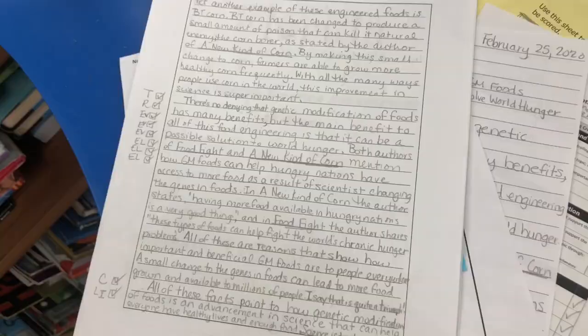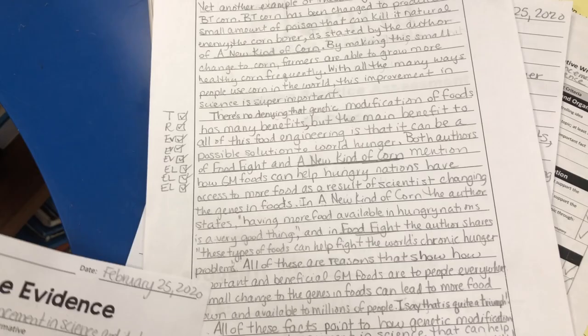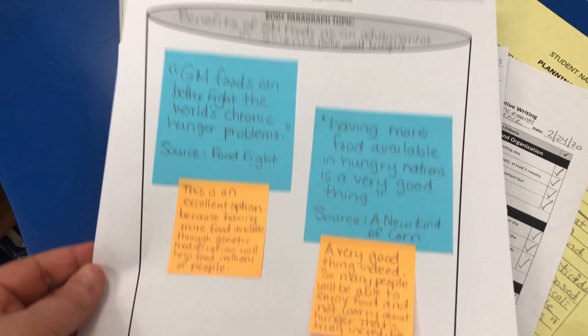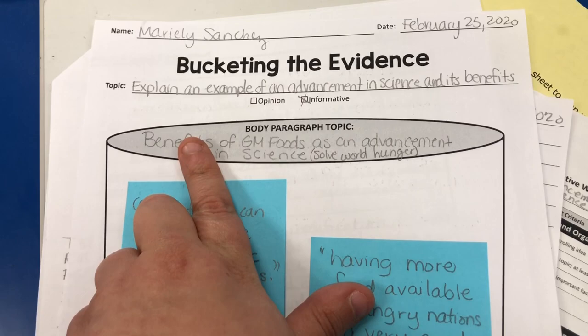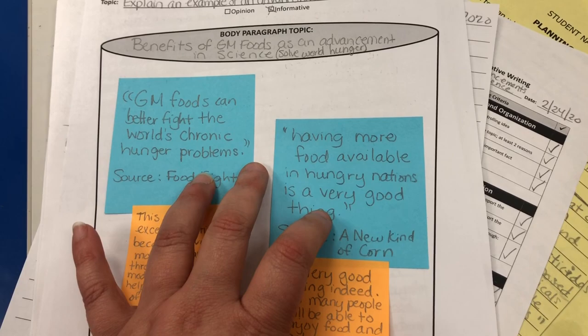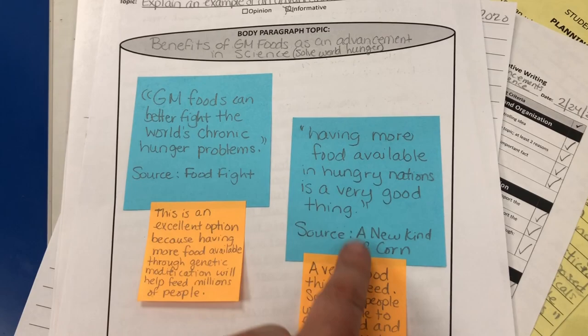Let me show you the bucketing activity first. This is the essay I showed you yesterday, and I wanted the students to really make sure they had all the parts they need for that last paragraph they're working on. So I have this sheet — it's a bucket — and over here they put the topic, the kind of essay it is, and the body paragraph topic. For this one, the last body paragraph was Benefits of GM Foods as an Advancement of Science, which we said could solve world hunger. I gave the students blue stickies for evidence and orange stickies for elaboration, and had them look through our sources for evidence. We found two pieces of evidence, and then they used an orange sticky to elaborate on that.